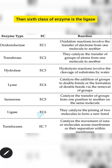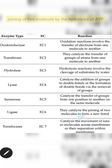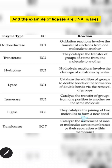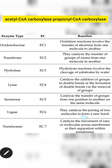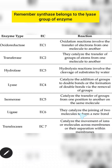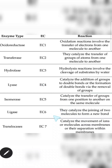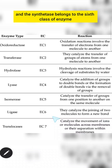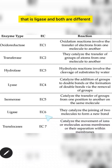The sixth class of enzyme is ligase. Ligase will catalyze the joining of two molecules by the hydrolysis of ATP. Examples of ligases are DNA ligase, all carboxylases like pyruvate carboxylase, acetyl-CoA carboxylase, propionyl-CoA carboxylase, and all synthetases like glutamine synthetase. Remember: synthase belongs to the lyase group (fourth class), while synthetase belongs to the ligase group (sixth class) — both are different.